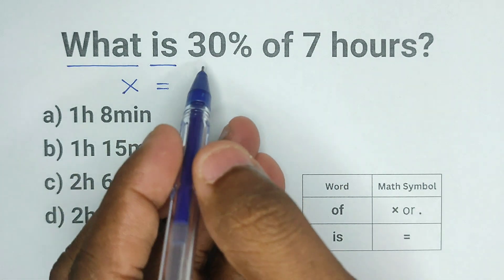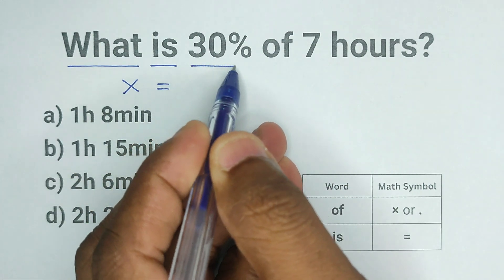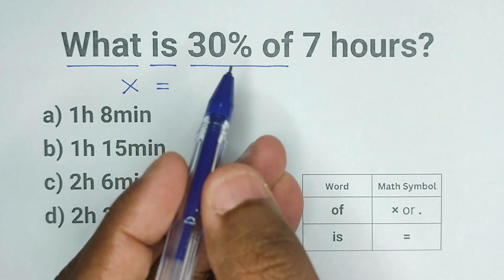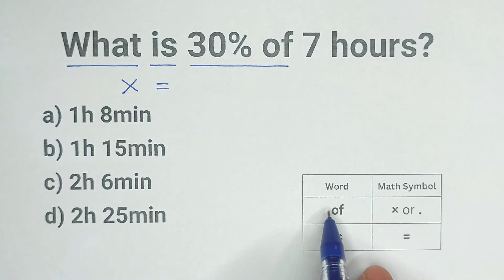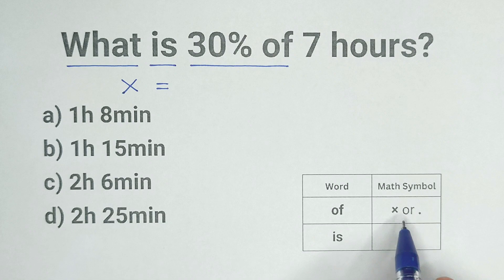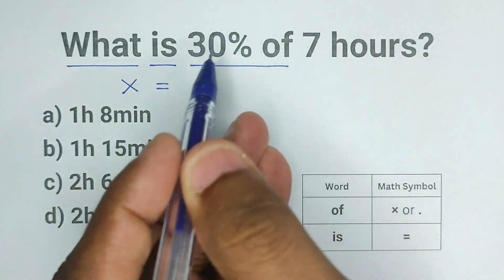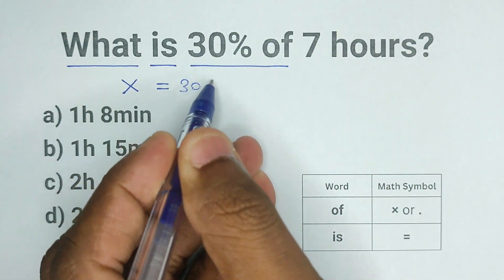If we keep moving to the right, the next two words are 30% of. And if you look at the chart, the mathematical symbol for the word 'of' is the multiplication symbol, which is × or the dot. So instead of writing 30% of, I'm going to write 30% multiply.